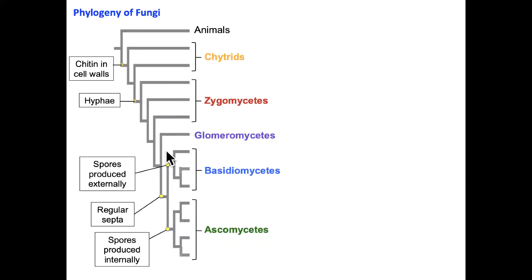If we look at this overview of the phylogeny of fungi, one of the things we'll find is that they all have cell walls — that distinguishes them from animals — and that there is chitin in those cell walls. Chitin is the polymer used to make the cell wall. A derived feature within fungi is a life form known as hyphae, which are long cylindrical tubes that have multiple nuclei.